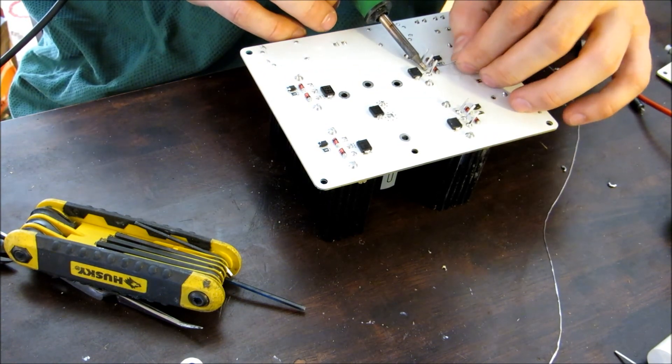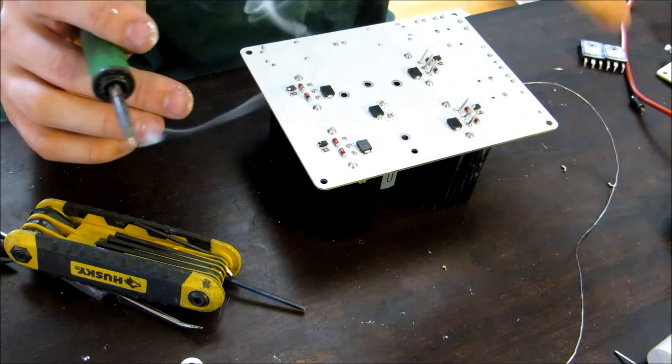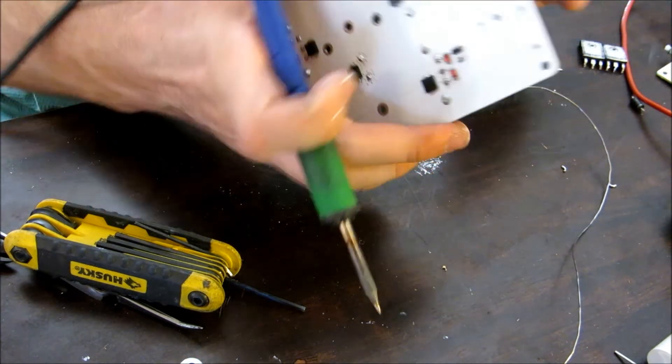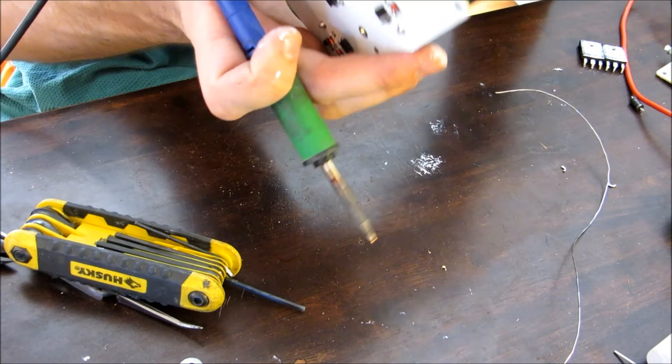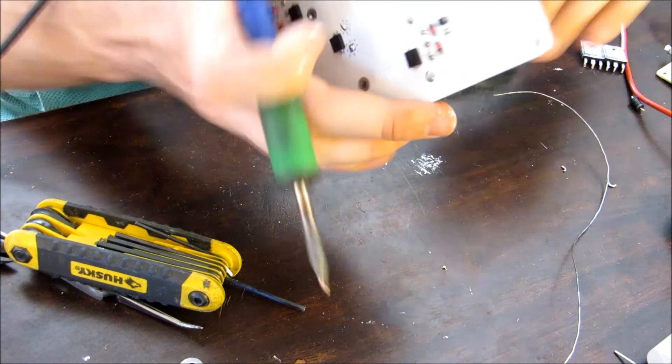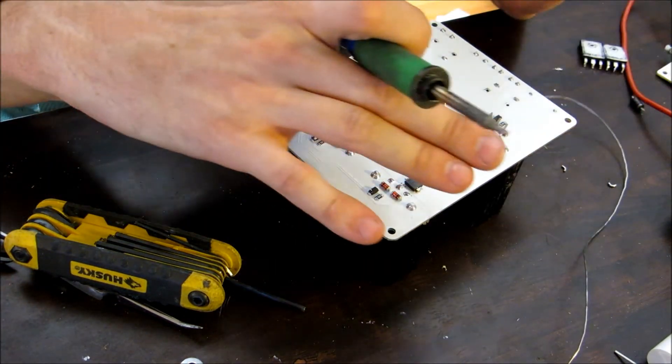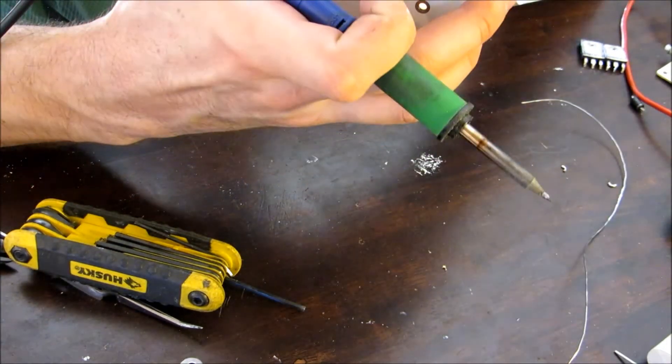Now another thing I need to mention is when you put the IGBT in, make sure you bend the leads this way. Because this board was designed for some smaller heat sinks and they're a little bit different as far as the part is back a little bit further. So the leads kind of need to go this way a bit so that the part can set against the heat sink better.